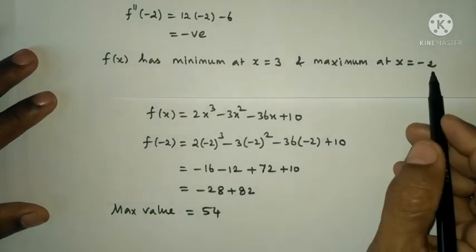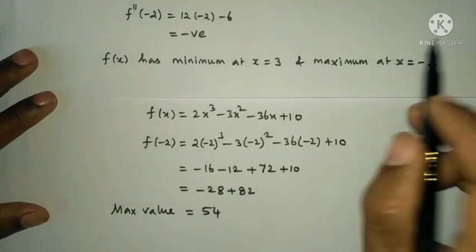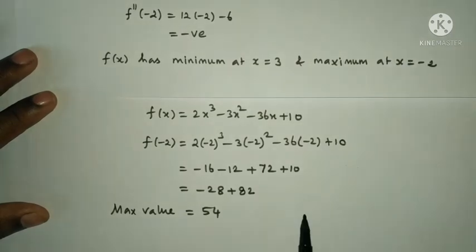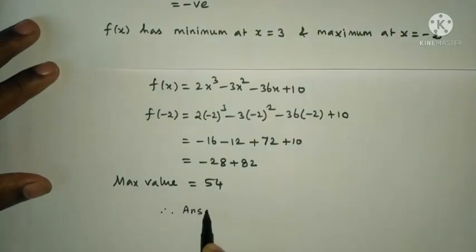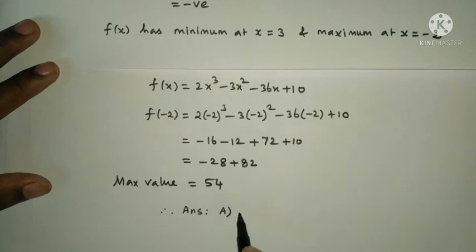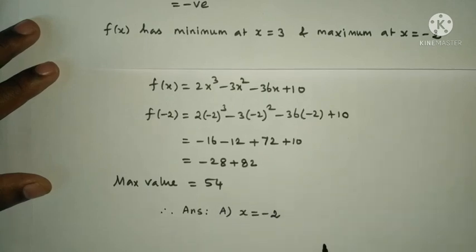Therefore x equals minus 2 is where the maximum occurs. The answer is option A: x equals minus 2 is the correct answer.